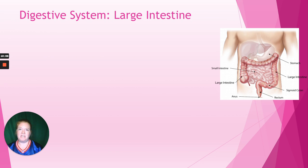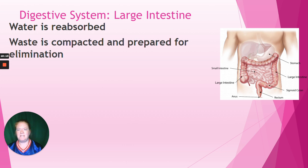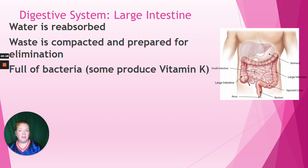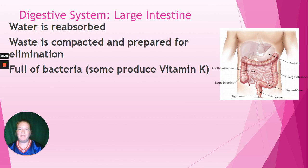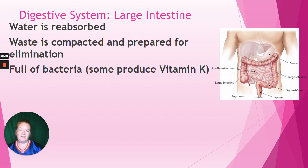Then let's move to the large intestine. In the large intestine, water is reabsorbed, waste is compacted, and it's prepared for elimination. Our large intestine is full of bacteria, and most of them are super helpful — some even produce vitamin K, which is important for clotting. If you take an antibiotic, not only do you kill the bacteria for your illness, you can also destroy a lot of the good bacteria in your intestine. Taking a probiotic or eating yogurt can help replenish that bacteria.